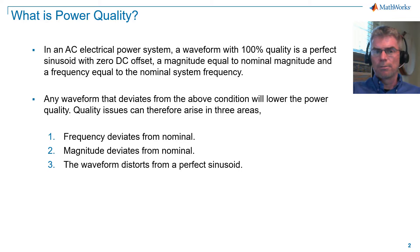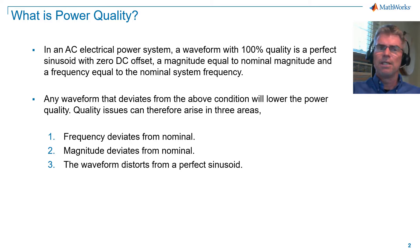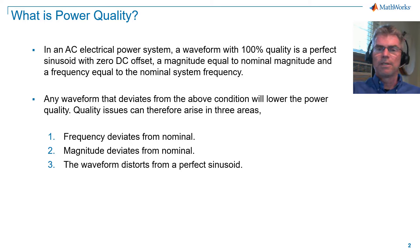In an AC electrical power system, a waveform with 100% quality is a perfect sinusoid with 0 DC offset, a magnitude equal to nominal magnitude, and a frequency equal to nominal system frequency. Any waveform that deviates from the above condition will lower the power quality. Quality issues can therefore arise in three areas.